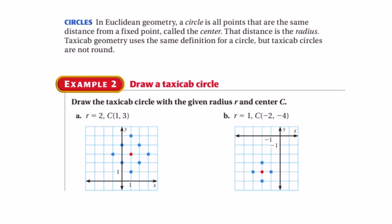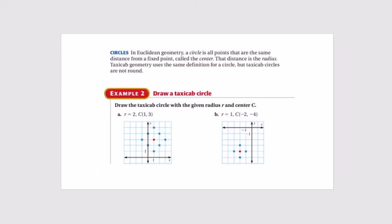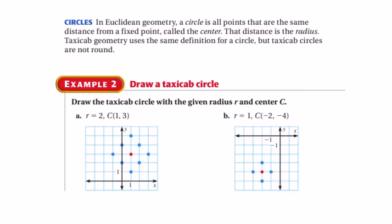Here on example 2B with the radius of 1, this one's really easy to see. I've got my center at negative 2, 4 and the radius of 1 produces only 4 points. The bigger the radius is, the more points you are going to be able to find.